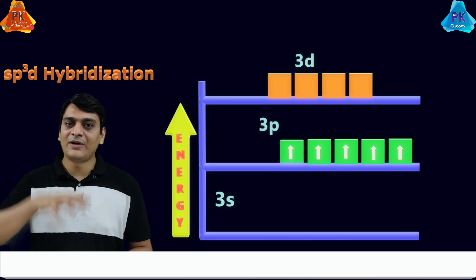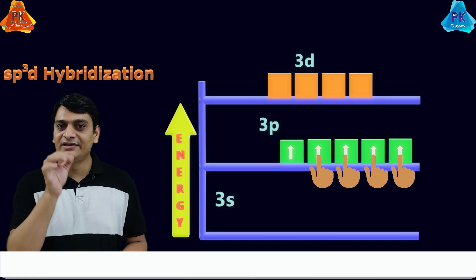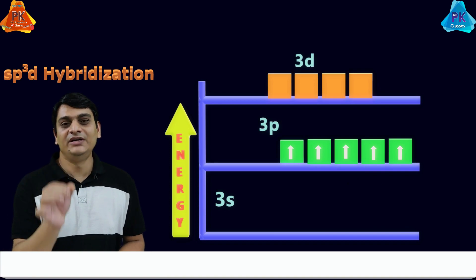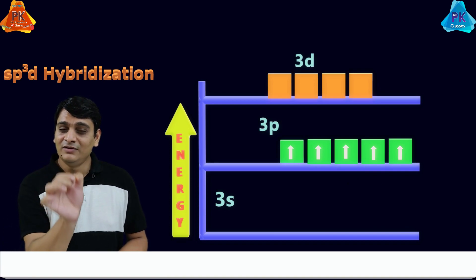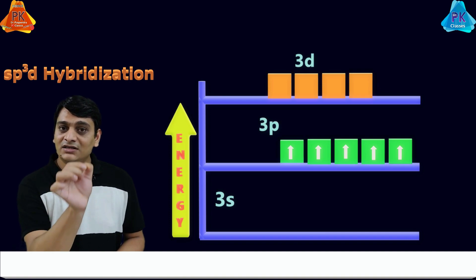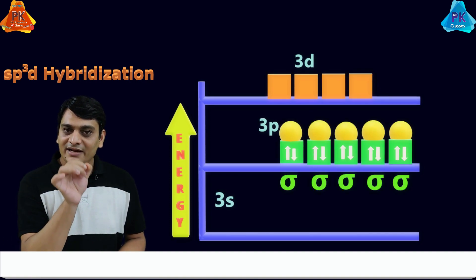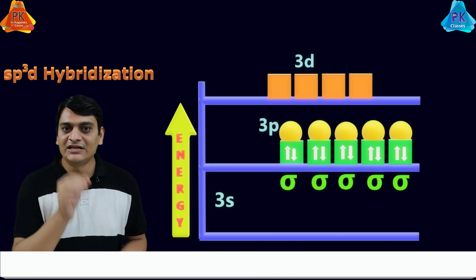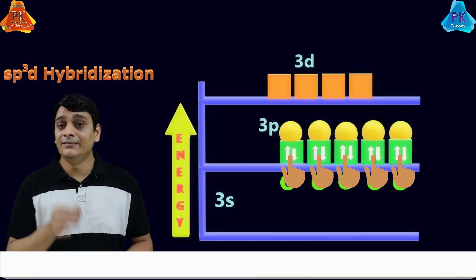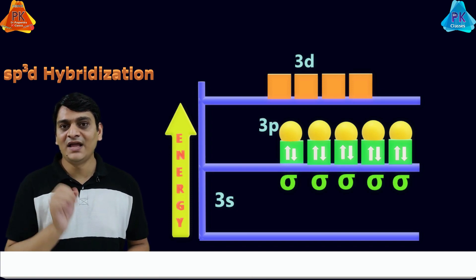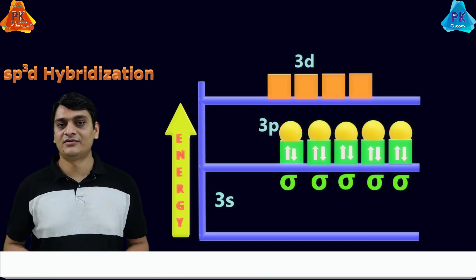We have five hybrid orbitals, represented here in green, and each orbital contains one electron. This one electron is shared with a chlorine atom, and after overlapping they form a sigma bond. So five sigma bonds in total are formed in PCl5, and the hybridization is sp3d.